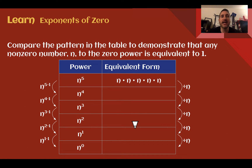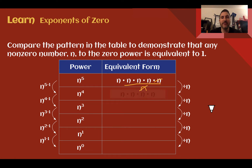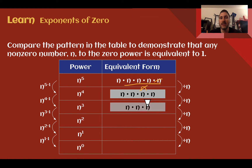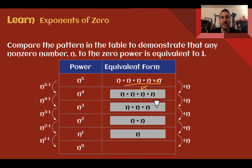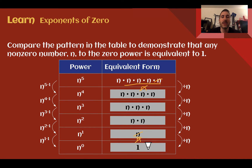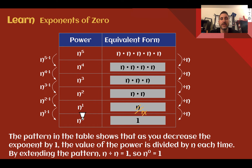Let's fill in the table to demonstrate that any non-zero number n to the zero power equals 1. If we had n to the fifth, that's n times n times n times n times n — n five times. If we divide by n, we can cancel one out and have four n's left. So by dividing, we subtracted 1 from our exponent. Continuing down to n to the third, second, first — if we divide by n one more time, there are no n's left, but any number divided by itself equals 1. So n divided by n equals 1, meaning n to the zero is equal to 1.